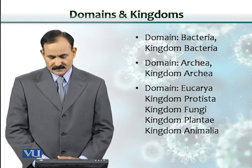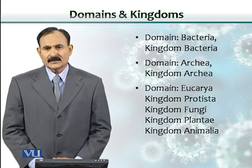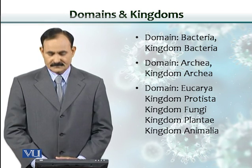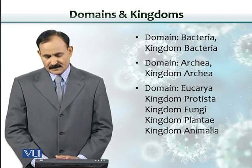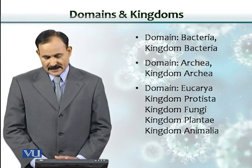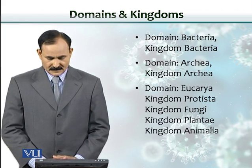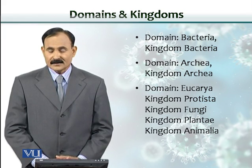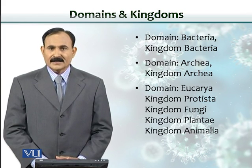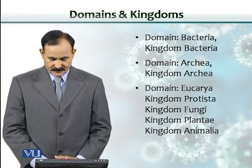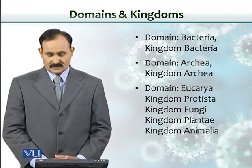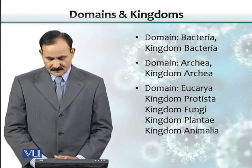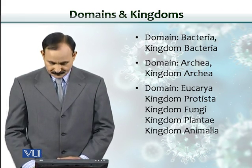This slide simply indicates what domains contain which kingdoms. For example, domain Bacteria has kingdom Bacteria, and domain Archaea's kingdom is also Archaea. For domain Eukarya, there are four kingdoms that include Protista, Fungi, Plantae, and Animalia.